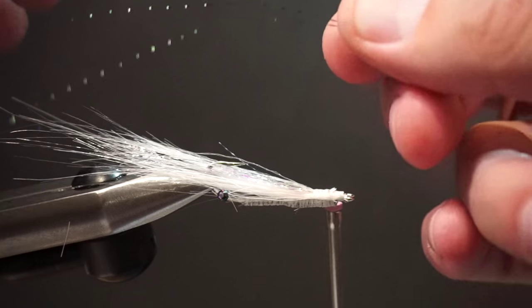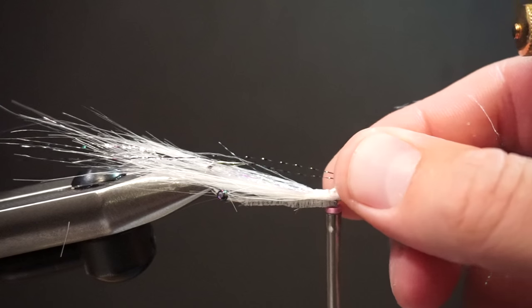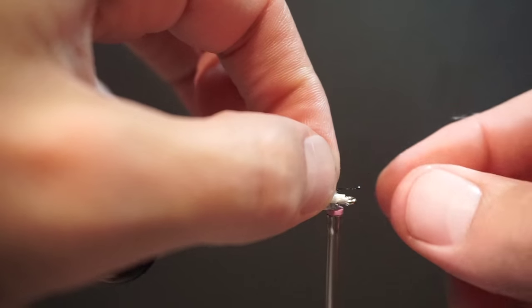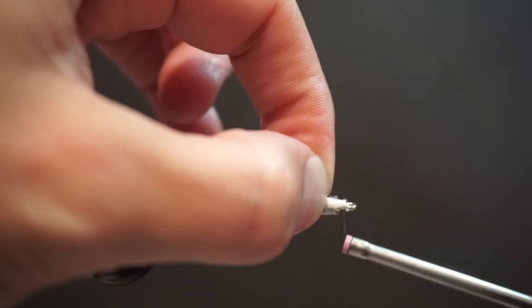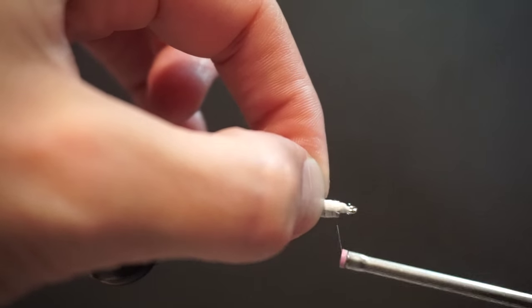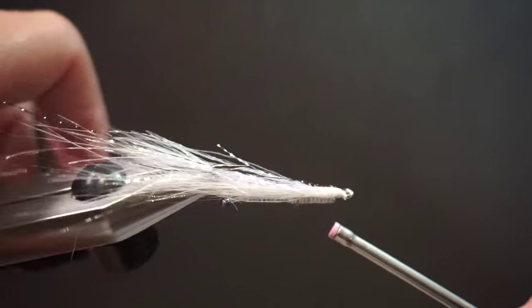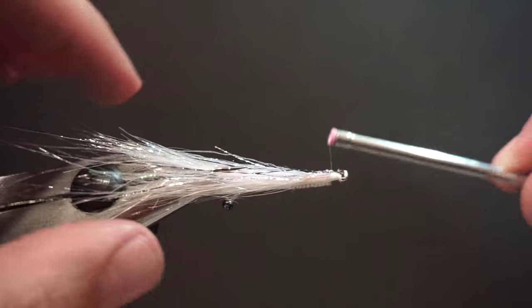Then some black crystal flash, just kind of fold it over for a little antenna here. Center those right onto the back.